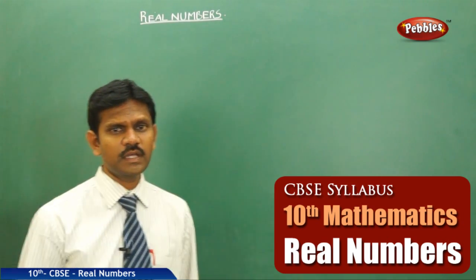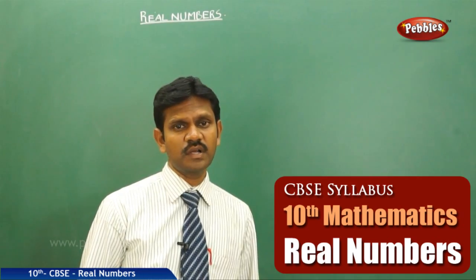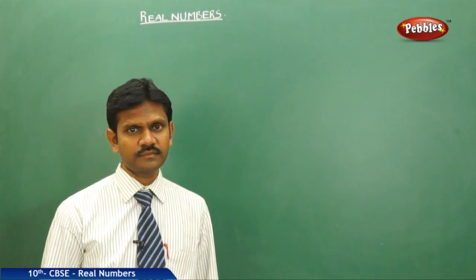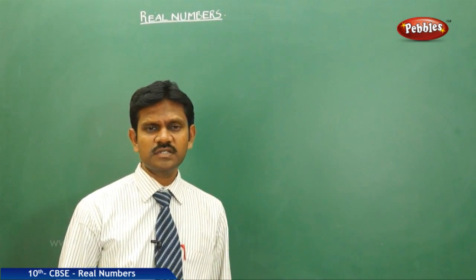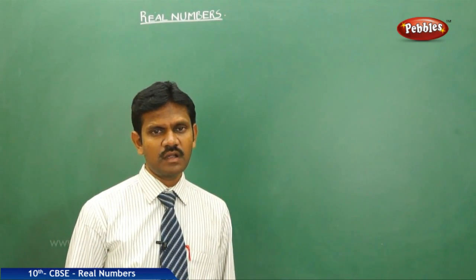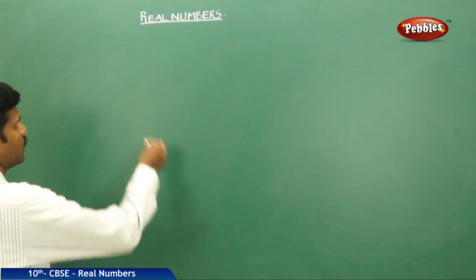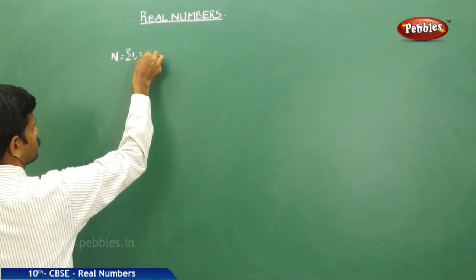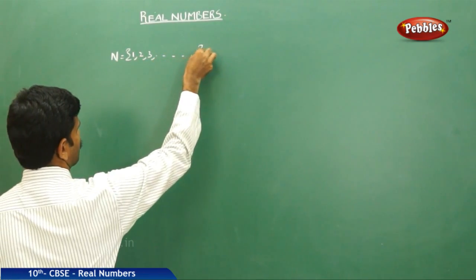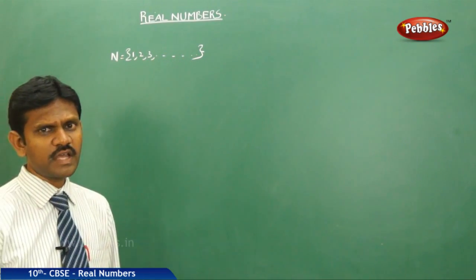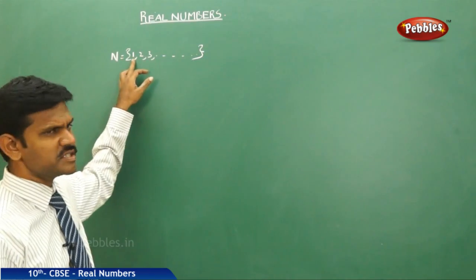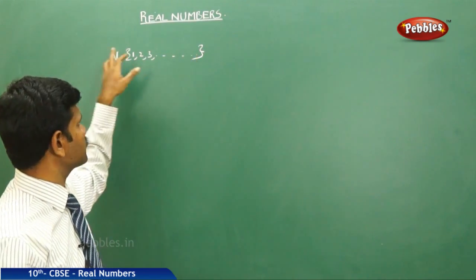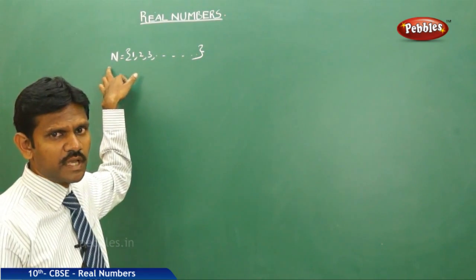From the very beginning, all of you know very well about the natural numbers. Natural numbers are the numbers which we generally use for counting. The least number of the natural numbers is 1 and the highest number cannot be defined. That is, N = {1, 2, 3, ...} and so on. The set of natural numbers is denoted with capital N.